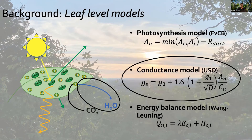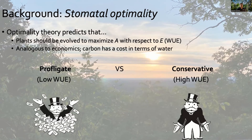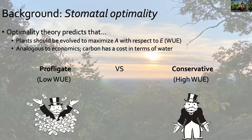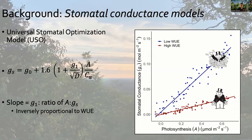Now talking about stomatal conductance — the process by which leaves lose water — most of our models are based on the idea of stomatal optimality. That's the theory that predicts that carbon is purchased at a cost with respect to water. Plants have evolved to spend as little water as possible per unit of carbon. Some plants are conservative with respect to their water use, and some are profligate. Looking at this with synthetic data, we can compare two leaves: one with high water use efficiency and one with low. The relationship between stomatal conductance and photosynthesis is thought to be linear under most circumstances, so the slope is inversely proportional to water use efficiency. At the same rate of photosynthesis, the two leaves have markedly different rates of stomatal conductance.